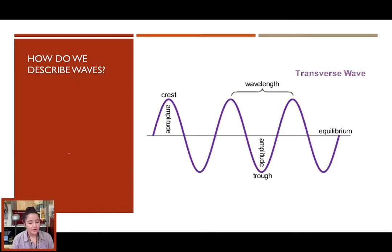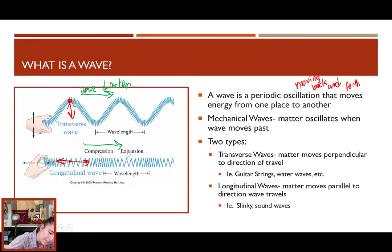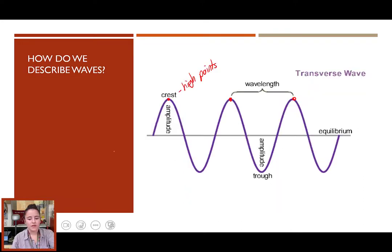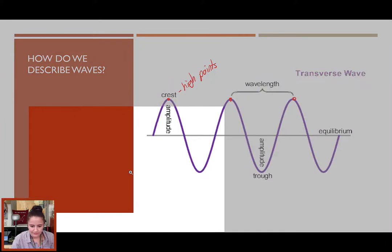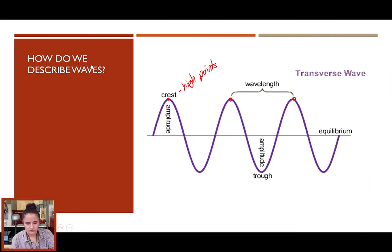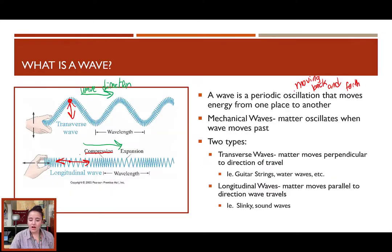We do need some vocabulary around waves. First one is the crest. All of the crests are the high points of the wave. Now, in a longitudinal wave, these are the compressions. At the bottom of the wave, we have our troughs, or low points. On your longitudinal waves, these are the expansions. Sometimes, you'll see them called the rarefactions. So, compression, rarefaction, crest, and trough.